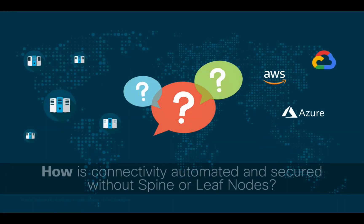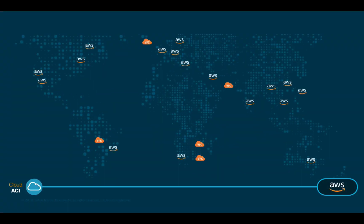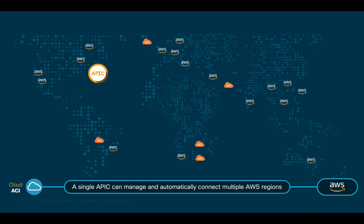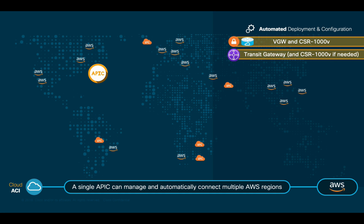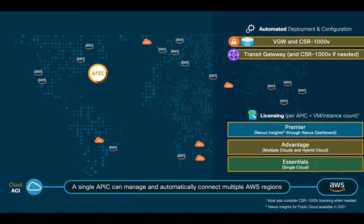So, you may be wondering: how does ACI automate and secure cloud connectivity if we don't have any spine or leaf nodes? As you may remember, each cloud provider has multiple regions and availability zones globally. In the case of AWS, ACI automates and secures cloud connectivity across VPCs and regions through a single Cloud APIC, which automatically deploys and configures VGWs and CSRs if you choose to use a hub-and-spoke model, or transit gateways if you prefer. In terms of licensing, you just need to choose the right option for each Cloud APIC you deploy based on your needs, defining how many instances or VMs you need to connect. For a single Cloud APIC deployment, you would only need the Essentials license. For multiple clouds or APICs, you would need the Advantage license. And finally, you would use Premier if you want to include Nexus Insights as part of the Nexus Dashboard for your cloud environment.